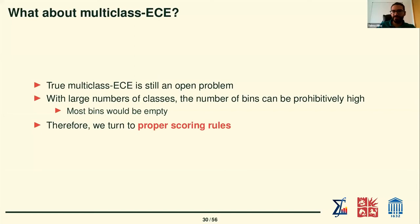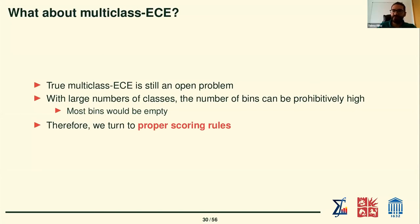With large numbers of classes — common nowadays — you would have a prohibitively high number of bins, because you want to know the interaction of every class with every other class. Most bins would be empty unless you had an essentially infinite number of instances. This is why we turn to proper scoring rules, which natively handle multi-class problems, and optimizing them does not mean learning to predict only the class distribution.